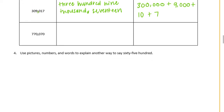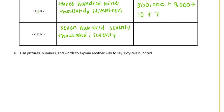And our last one: seven hundred seventy thousand seventy. Standard form: 770,070. And if we write that in expanded form, we have a seven in the hundred thousands place — seven hundred thousand — plus a seven in the ten thousands place, seventy thousand. Nothing in the thousands, nothing in the hundreds, and a seven in the tens place — seventy. And nothing in the ones.